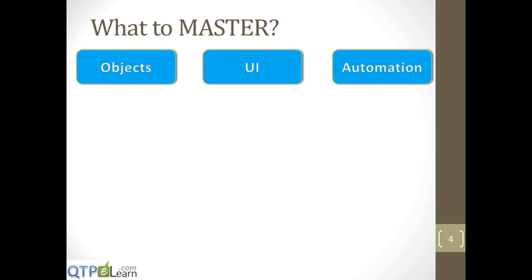So what do we master? The beginning part is how do we work with objects that QTP recognizes — how does it store them, how does it work with them? What is the overall user interface that the tool has, and how do we know which feature to use when? And automation basics — how do we move away from manual testing into automation, where do we start from, and how do we plan, build, and design them?